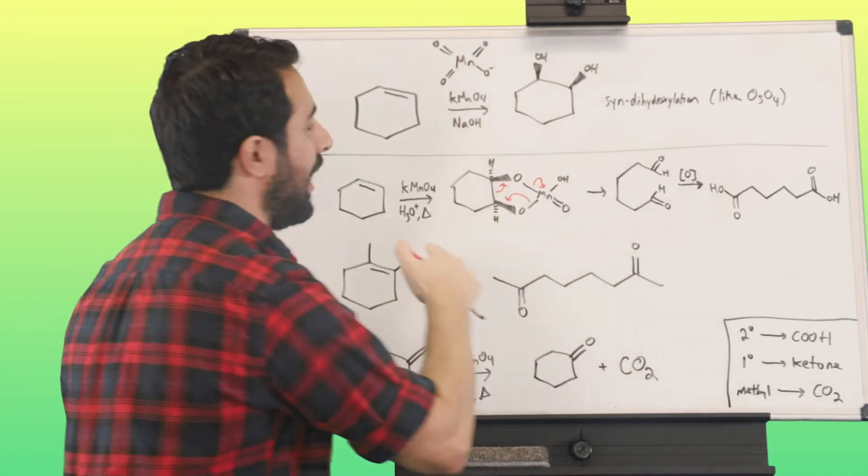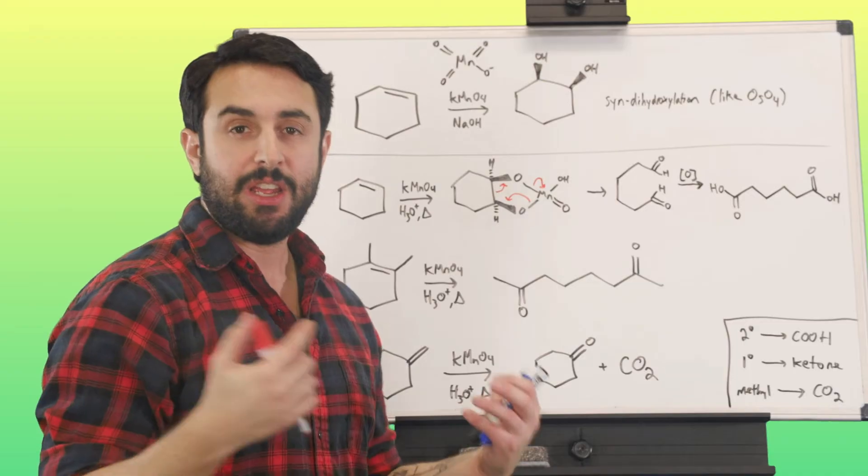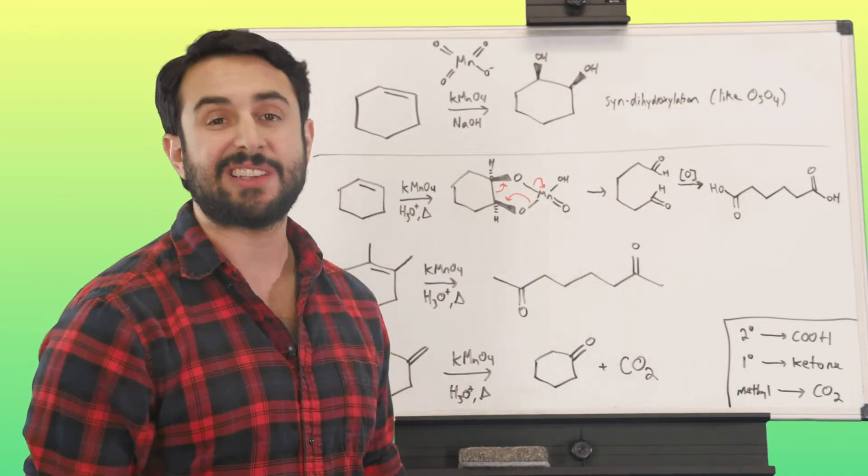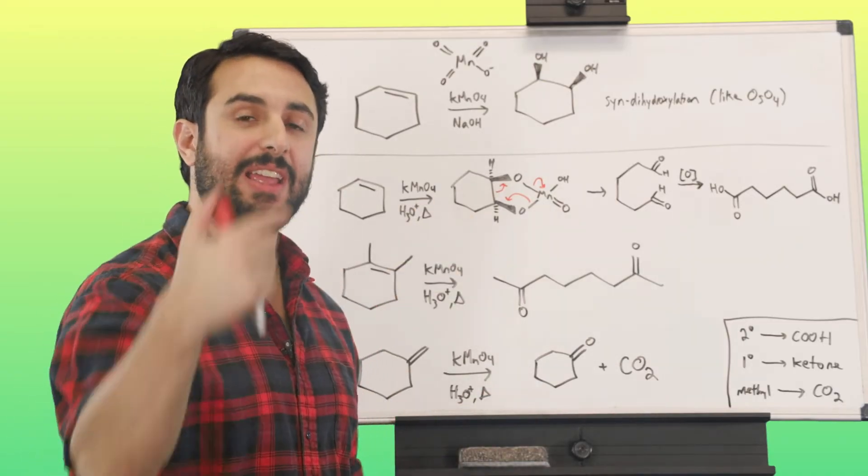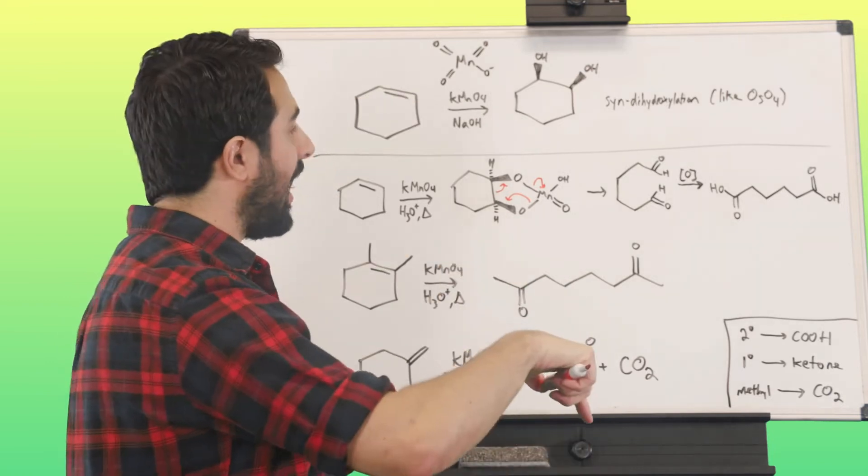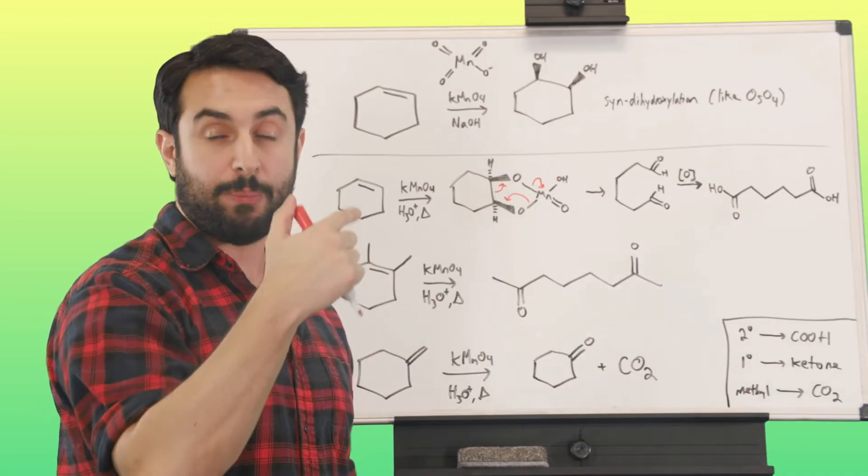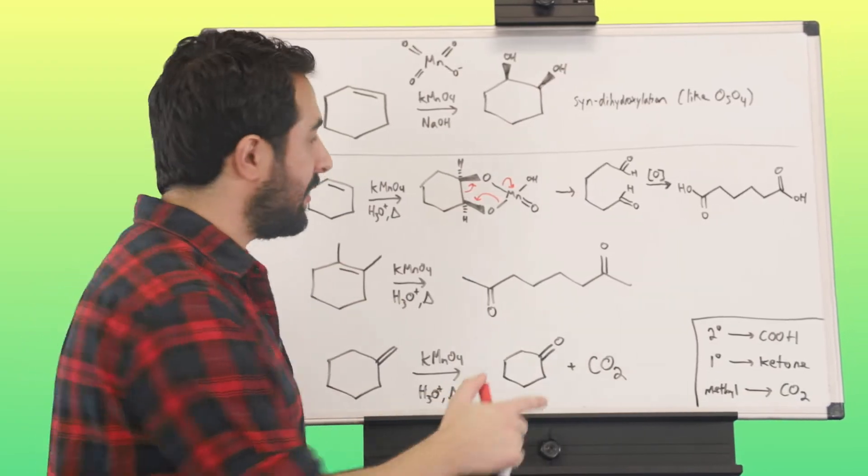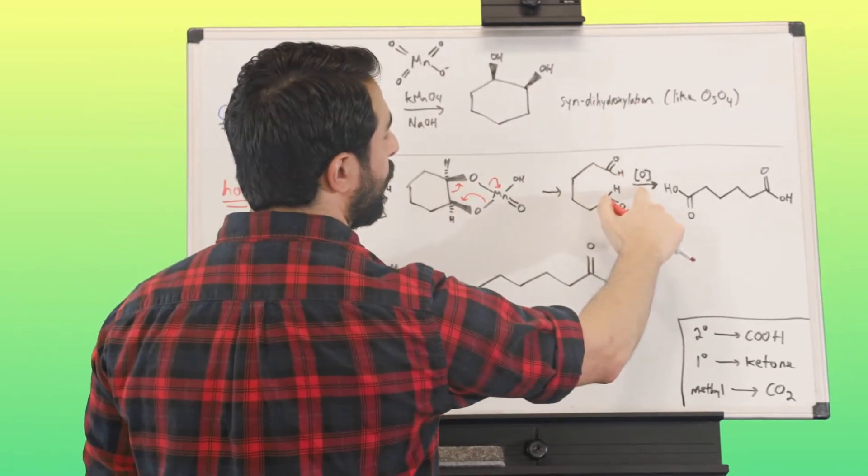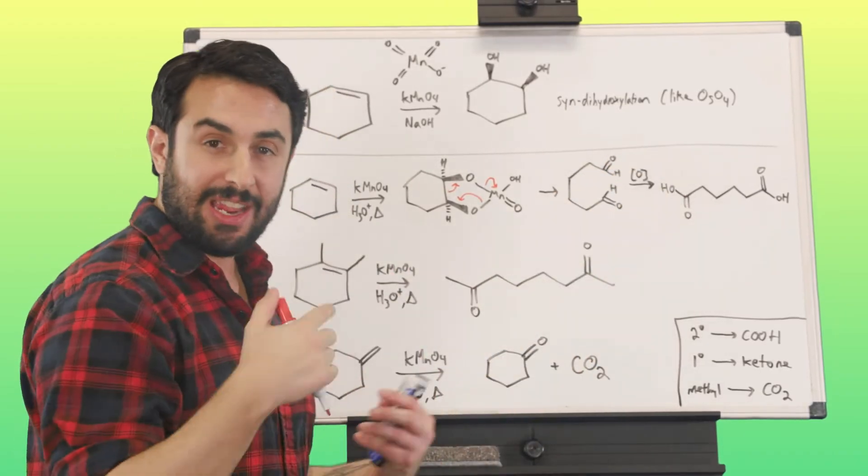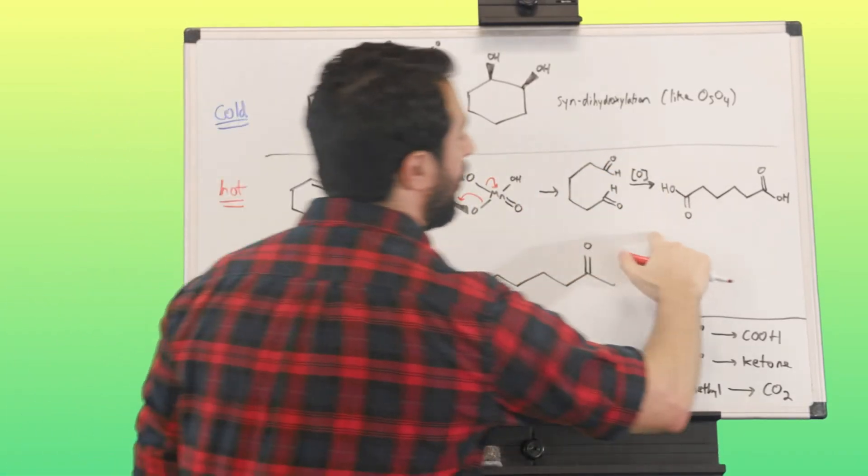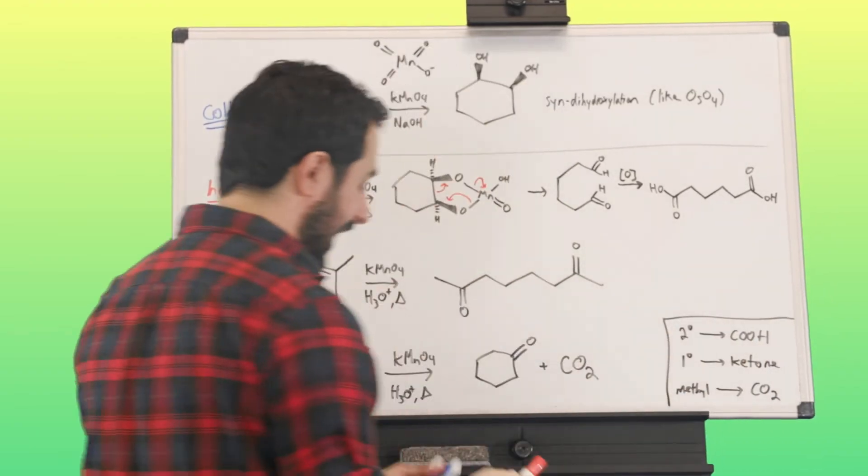We've popped that ring open, and we've got the carbons that were participating in the pi bond are now aldehyde carbonyl carbons. However, we know that potassium permanganate is still in solution. It's a pretty strong oxidizing agent. We know that potassium permanganate can oxidize a primary or secondary alcohol, but also an aldehyde. So aldehydes are going to get further oxidized in the presence of potassium permanganate. We're going to get all the way to the carboxylic acid.